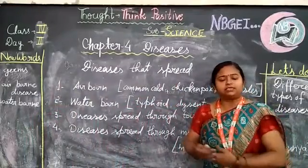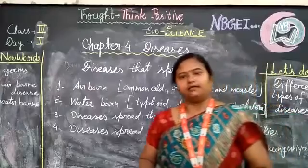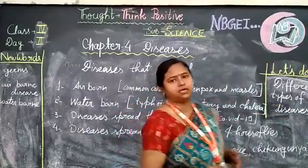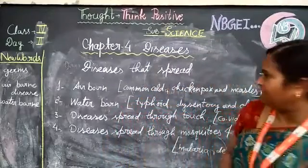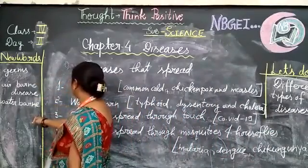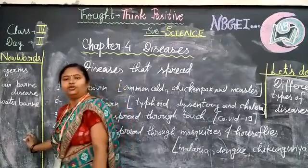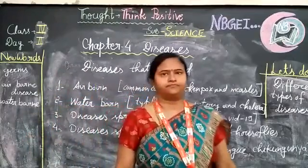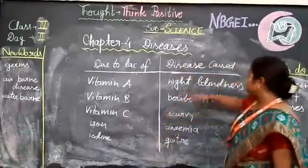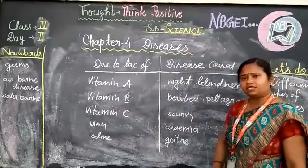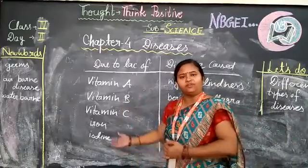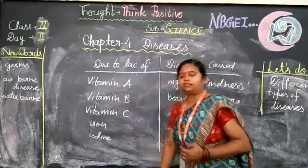These non-communicable diseases develop in our body due to a lack of nutrients in our cells, such as vitamins, minerals, and carbohydrates. These types of diseases arise due to a lack of any kind of vitamin, causing symptoms like spasms, heartache, and other things.